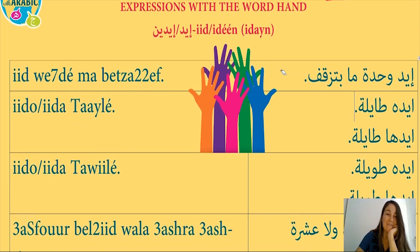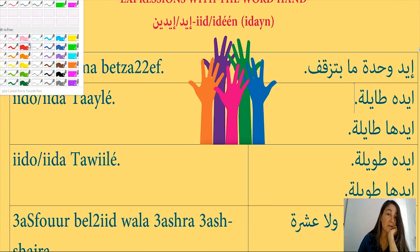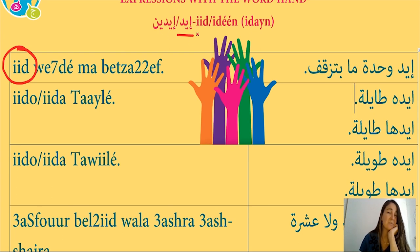Let's begin with the very first expression: eid wahdeh ma betzaif. Eid means hand, wahdeh is one in the feminine form — why? Because eid is a feminine word. Even though it doesn't have a ta marbuta, it's one of those exceptional feminine words in Arabic. So we say eid wahdeh with the feminine number, not wahad. Betzaif means it claps, ma betzaif means it doesn't clap.